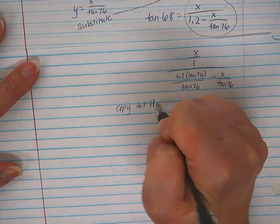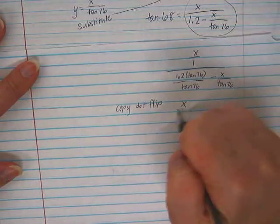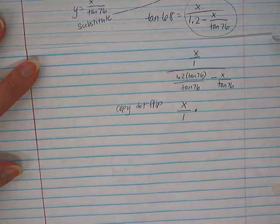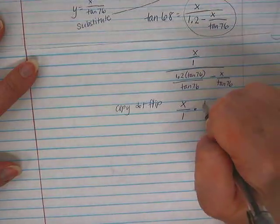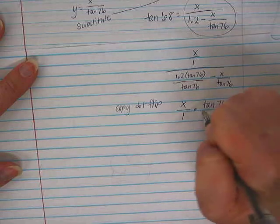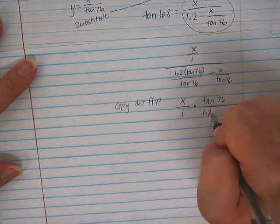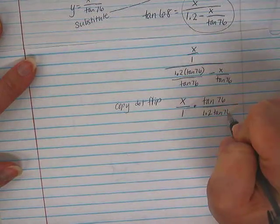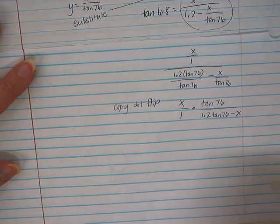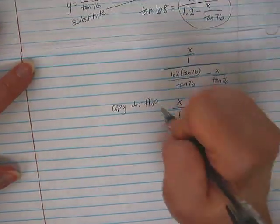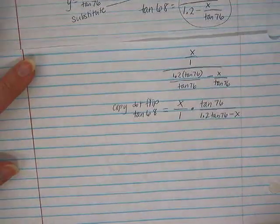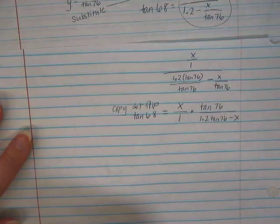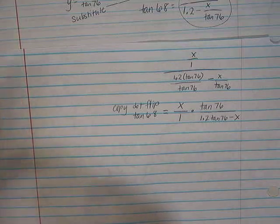So now I can copy dot flip, so I will have X over 1 times, and then this fraction I combine together and flip it. So that will be times tangent of 76 over 1.2 tangent 76 minus X. Now of course that whole thing is still equal to the tangent of 68.